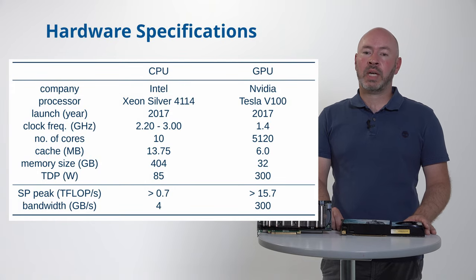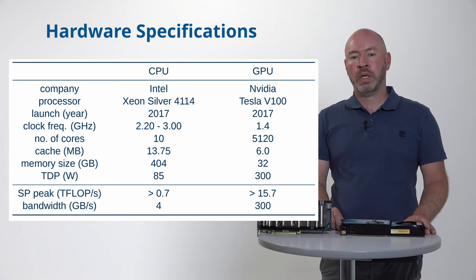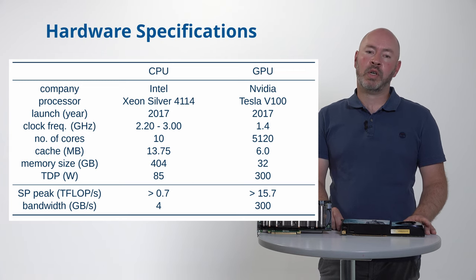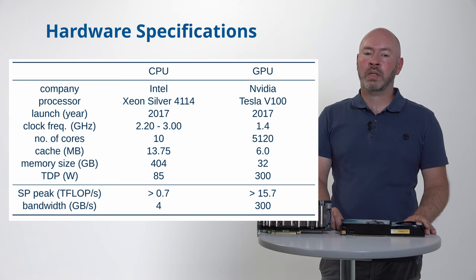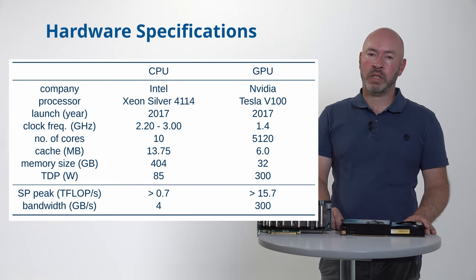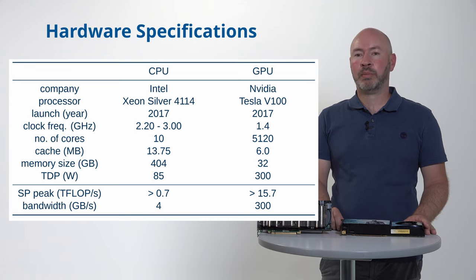Here we summarize the important hardware specifications of a CPU and GPU we will be using later in some performance analysis. Note in particular the single precision peak performance in flops and the bandwidth in gigabytes per second.